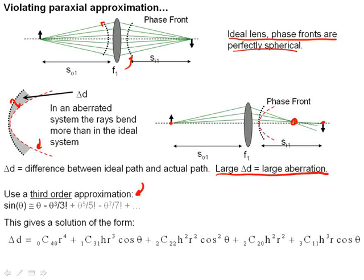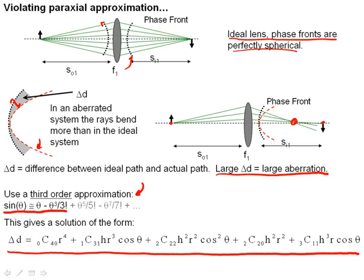In order to quantify this and come up with analytical solutions, we use what's known as a third order approximation, where we do the series expansion of sine of theta into two terms. One is the third order term, and the first order term, of course, is our paraxial approximation. This gives us a solution of the form of a polynomial equation that has some constant coefficients that depend on the lens, r, h, and cosine of theta.